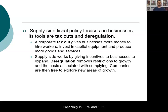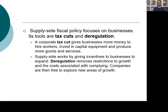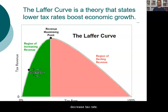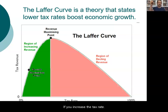Especially from 1979 to 1980, with Reagan in the United States and Thatcher in the United Kingdom, neoliberal policies became popular. One of the first policies implemented was tax cuts. They wanted to incentivize private entrepreneurs to invest in the economy. According to the Laffer curve — as you can see — if you increase tax rates beyond a point, tax revenue of the state will actually decrease, and entrepreneurs are discouraged from investing.